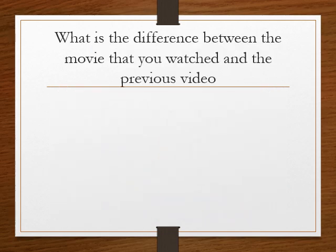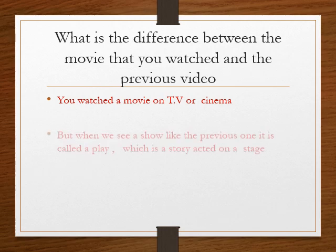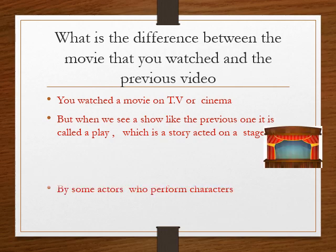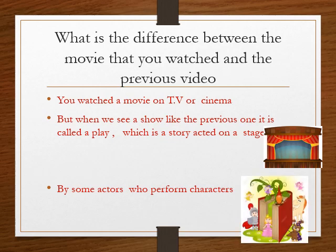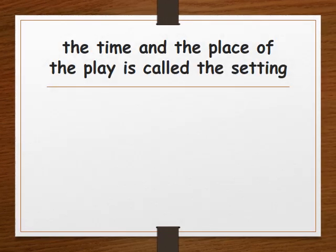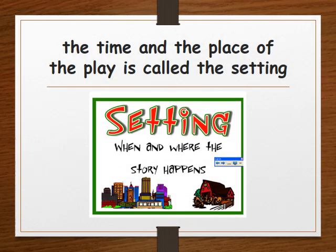What is the difference between the movie that you watched and the previous video? You watched a movie on TV or cinema, but when we see a show like the previous one, it's called a play, which is a story acted on a stage by some actors who perform characters. The time and the place of the play is called the setting.